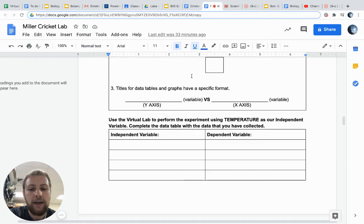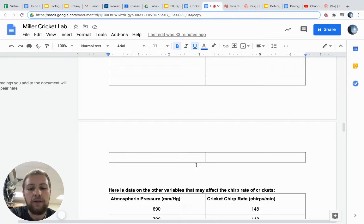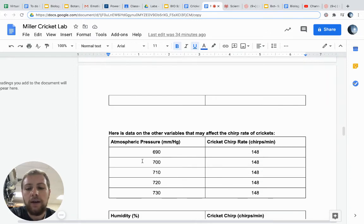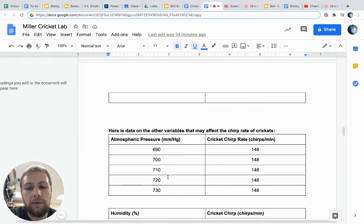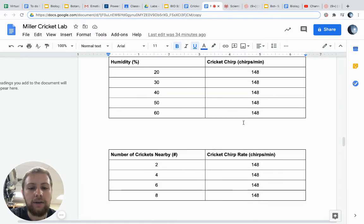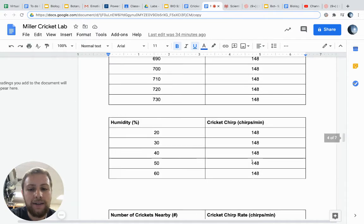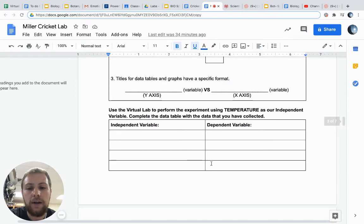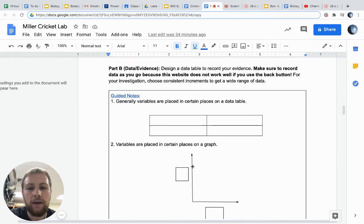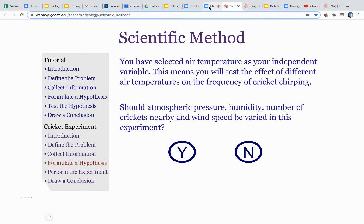As you look down at your data tables, there's only one table you need to fill out. The other ones have all been done for you because these other four independent variables were determined not to have an impact on cricket chirp rate. You see 148 chirps per minute stays the same no matter if you change those variables. So we're going to fill in just this data table today.